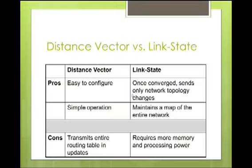A quick comparison chart: distance vector is typically easy to configure with very simple operation, but a con is that it transmits entire routing updates amongst routers. Link state, once converged, sends only network topology changes and maintains an entire map of the network, but it does require more memory and more processing power on the CPU, and more administrator knowledge to configure properly.